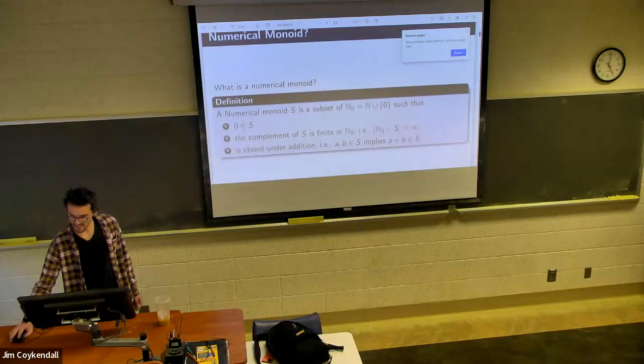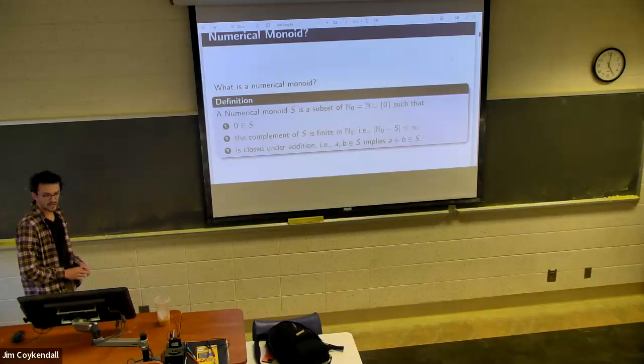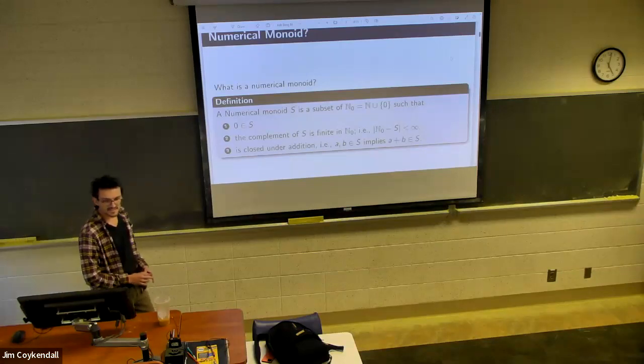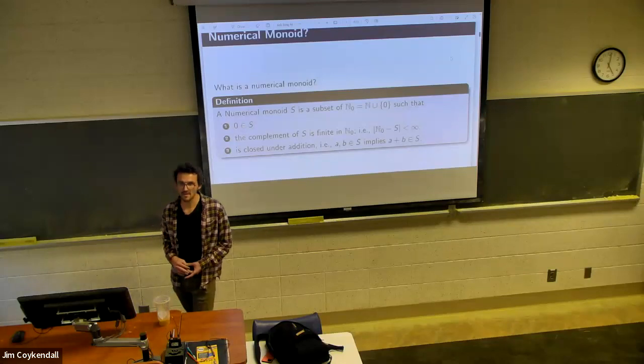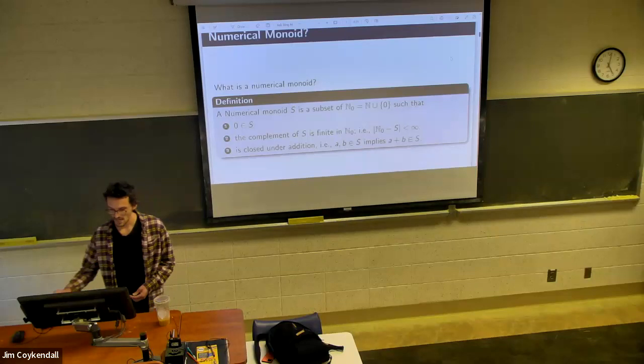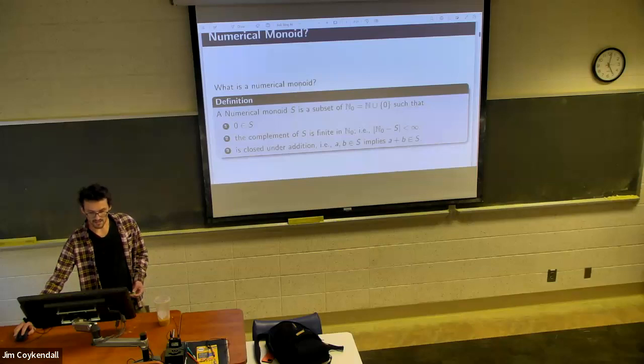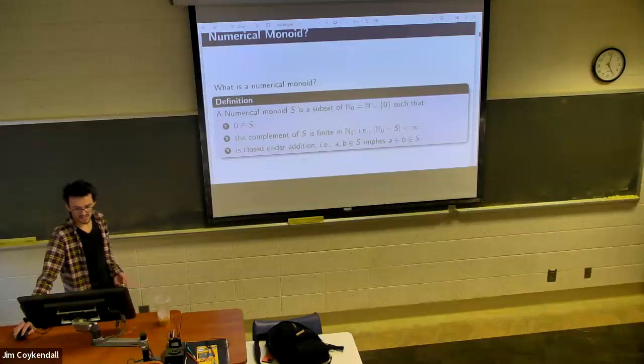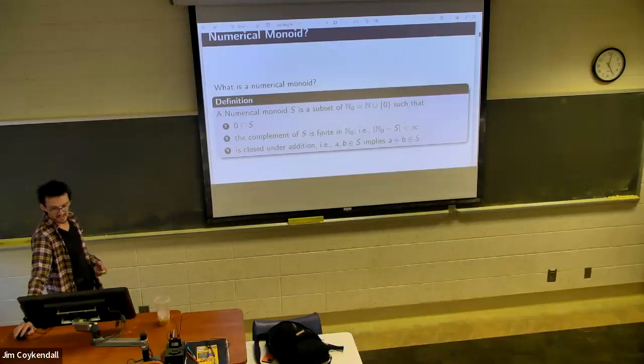So what even is a numerical monoid? Well, it's a subset of the non-negative integers. So including zero, all positive numbers. We assume zero is in our monoid, which makes it a monoid. The complement of S is finite, and it's closed under addition, meaning that if A and B are both at S, then A plus B is also in S.